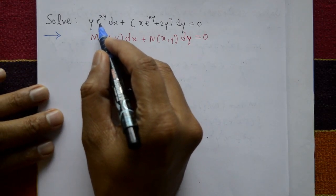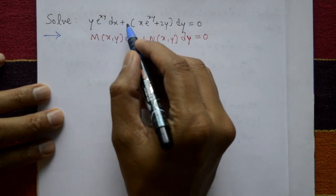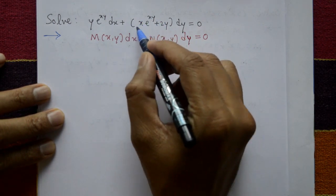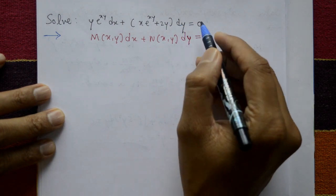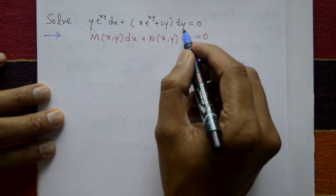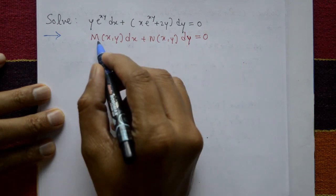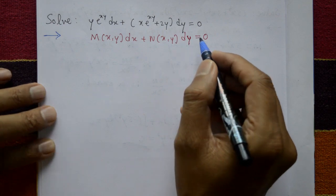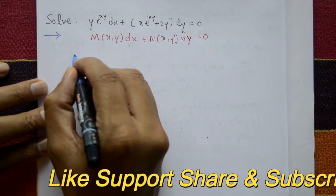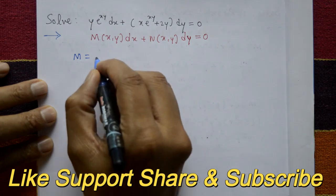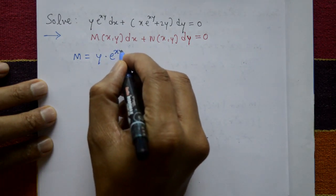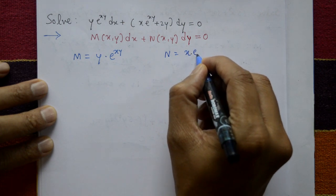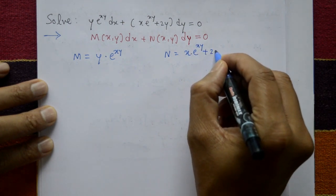Solve y·e^(xy) dx + (x·e^(xy) + 2y) dy = 0. In this form, the given differential equation is M(x,y) dx + N(x,y) dy = 0, where M = y·e^(xy) and N = x·e^(xy) + 2y.